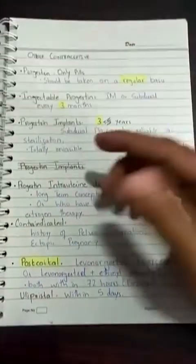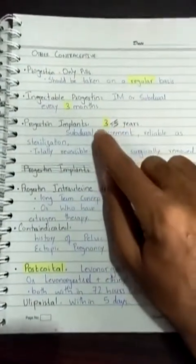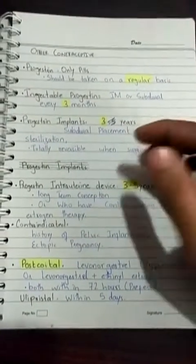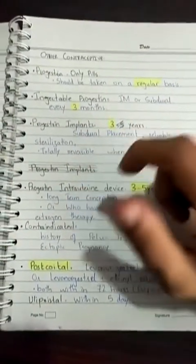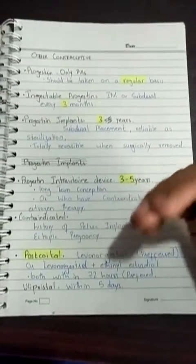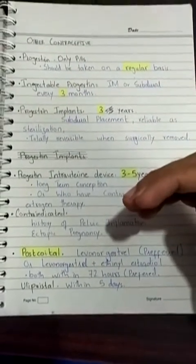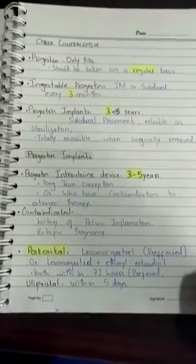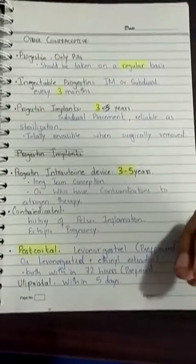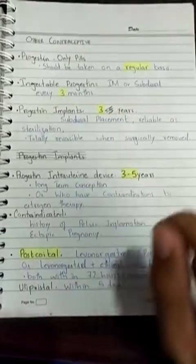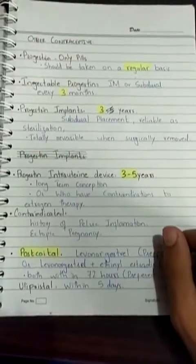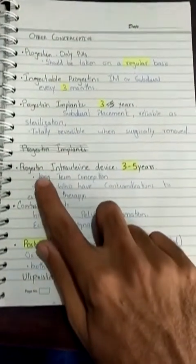Progestin implants, as the name suggests, are implanted within the body — subdermally, within the dermal layers. The implant is as reliable and potent as surgical sterilization in women, and it is totally reversible after surgical removal. Most importantly, it works for around three years, making it suitable for long-term use.